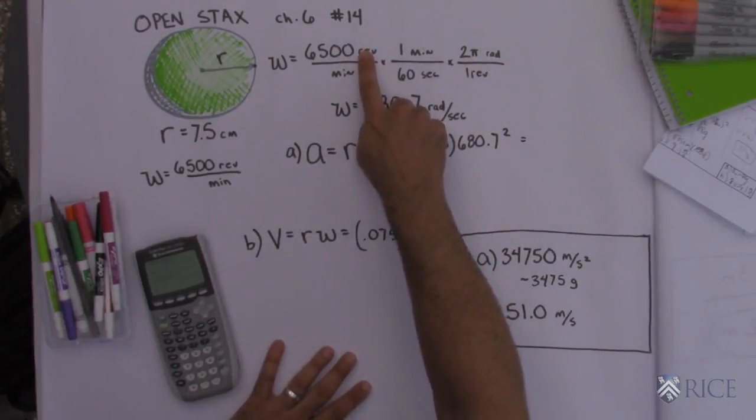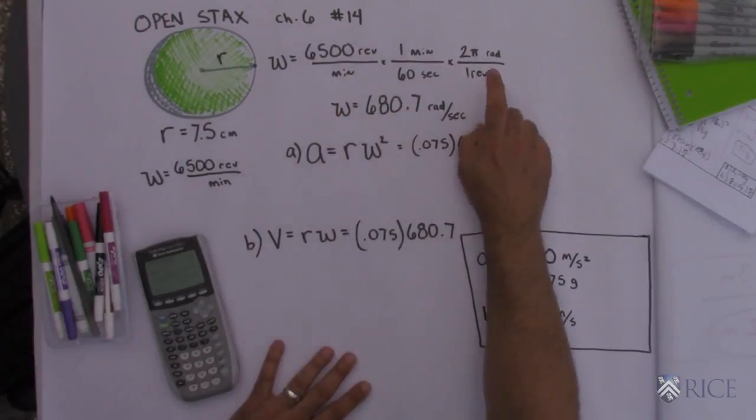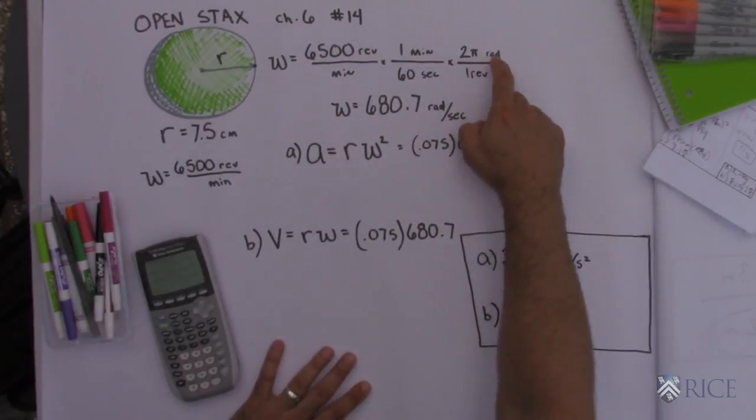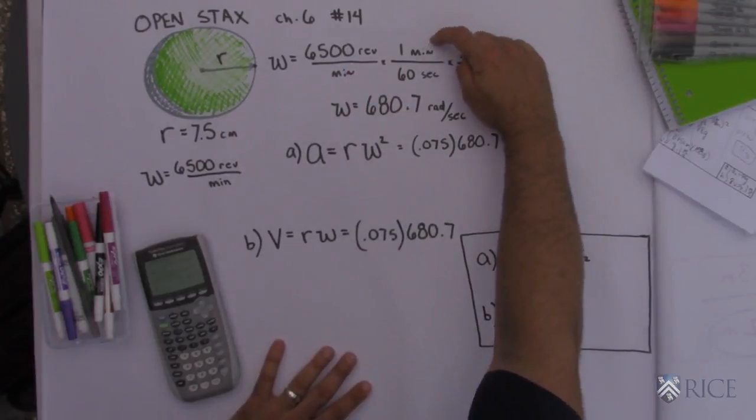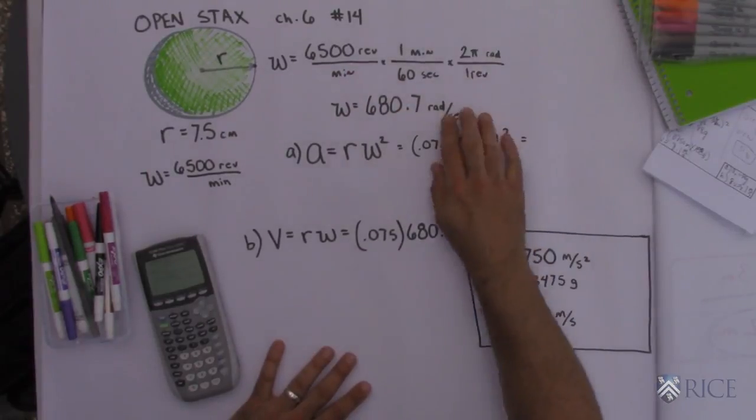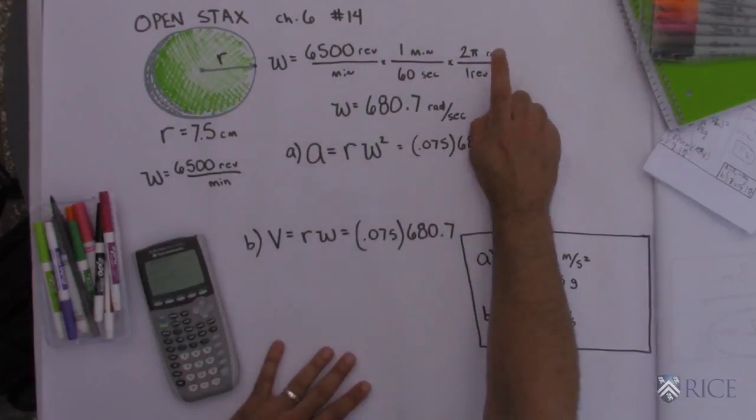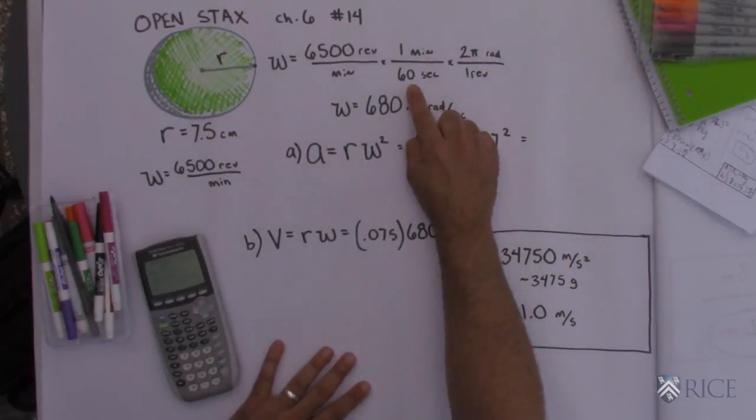Now to do that I had revolutions on top so I knew I needed to put revolutions on the bottom. One revolution is 2 pi radians. I also needed to get rid of minutes. So since minutes is on the bottom over here I multiplied it and I put minutes on top.